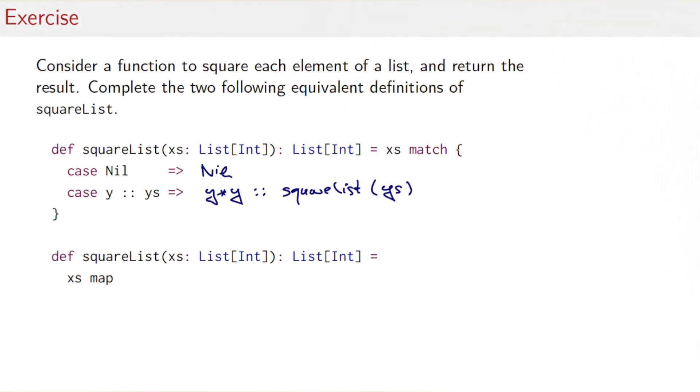So far so good. I think by now we all know how to do these things cold, but let's see whether we can do it shorter using map. Well, to use squareList with map, what can we do? We map it by the function that takes an x and returns x times x. And that's it. Obviously, the definition with map is much shorter, and I would argue also clearer than the one that uses pattern matching and recursion.